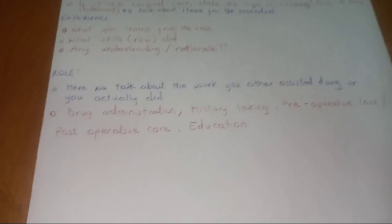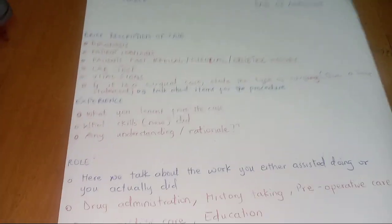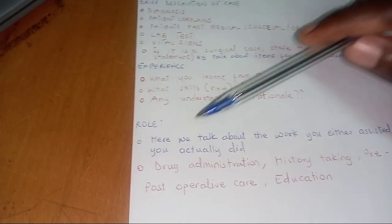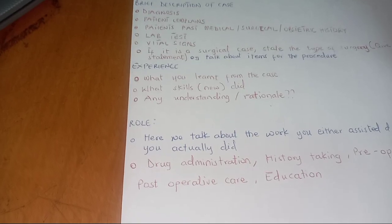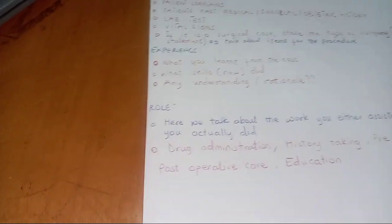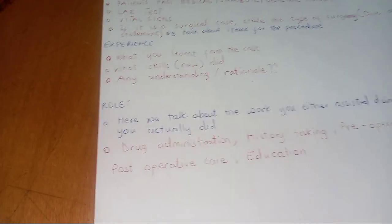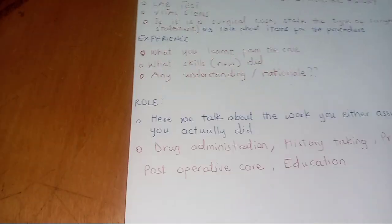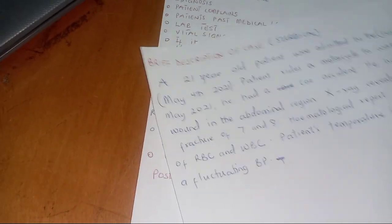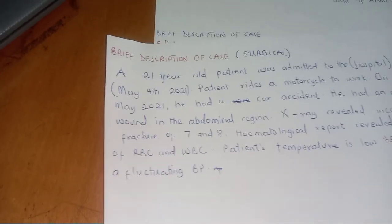So that's a brief description of a clinical case report. The main components are: brief description of the case, experiences, and the role. I have a sample of a brief description of the case here. I know the experiences and the rules are easy — if you just go by these simple guidelines you'll get it very easily. This sample case looks surgical.